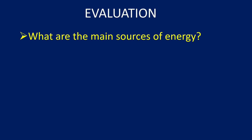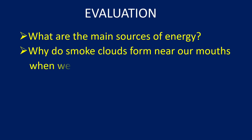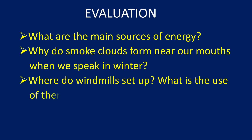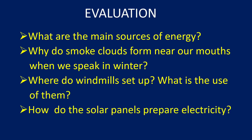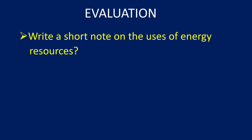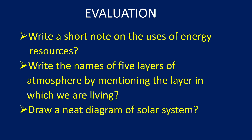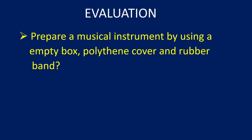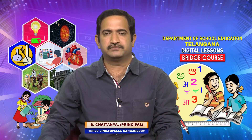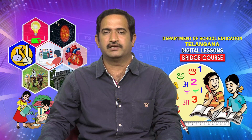Evaluation questions: What are the main sources of energy? Why do smoke clouds form near the mouth when we speak in winter? Why are windmill setups used and what are the uses of them? How do solar panels produce electricity? Write a short note on the uses of energy resources. Write the names of the five layers of atmosphere, mentioning the layer in which we are living. Draw a neat labeled diagram of the solar system. Prepare a musical instrument using an empty box, polythene cover, and rubber band. Dear children, today we have learnt about energy resources, renewable and non-renewable energy resources, sources of energy, and sound-producing agents. Let us meet in the next session for another topic. Thank you.